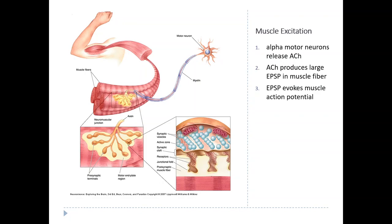Muscle fibers, just like the axons of neurons, are packed with voltage-gated sodium channels. When you produce an EPSP in the postsynaptic membrane, it always produces a large action potential which travels all the way up and down the muscle fiber. That's different from neurons, where a postsynaptic neuron may or may not produce an action potential depending on many factors. Muscle fibers are generally always going to respond to motor neuron activity by producing their own action potentials.